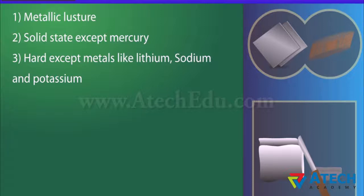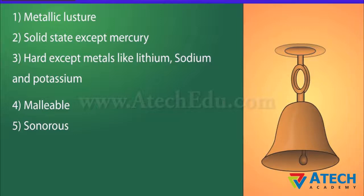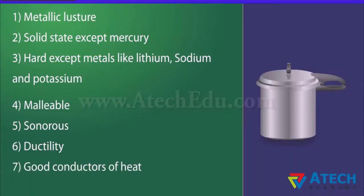Metals are malleable — they can be beaten into thin sheets. Metals are sonorous; they make sound when struck hard. Metals like copper and gold can be drawn into thin wires; this ability is called ductility. Metals are good conductors of heat and have high melting points. Exceptions are gallium and caesium, which have very low melting points. The best conductors of heat are silver and copper, while lead and mercury are comparatively poor conductors of heat.